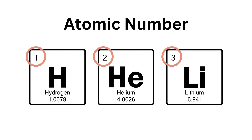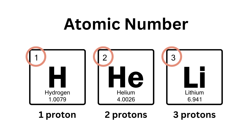Now, what exactly does the atomic number mean? It denotes the number of protons in an atom's nucleus. This number defines and identifies an element. For example, hydrogen has one proton, helium has two, and so on.